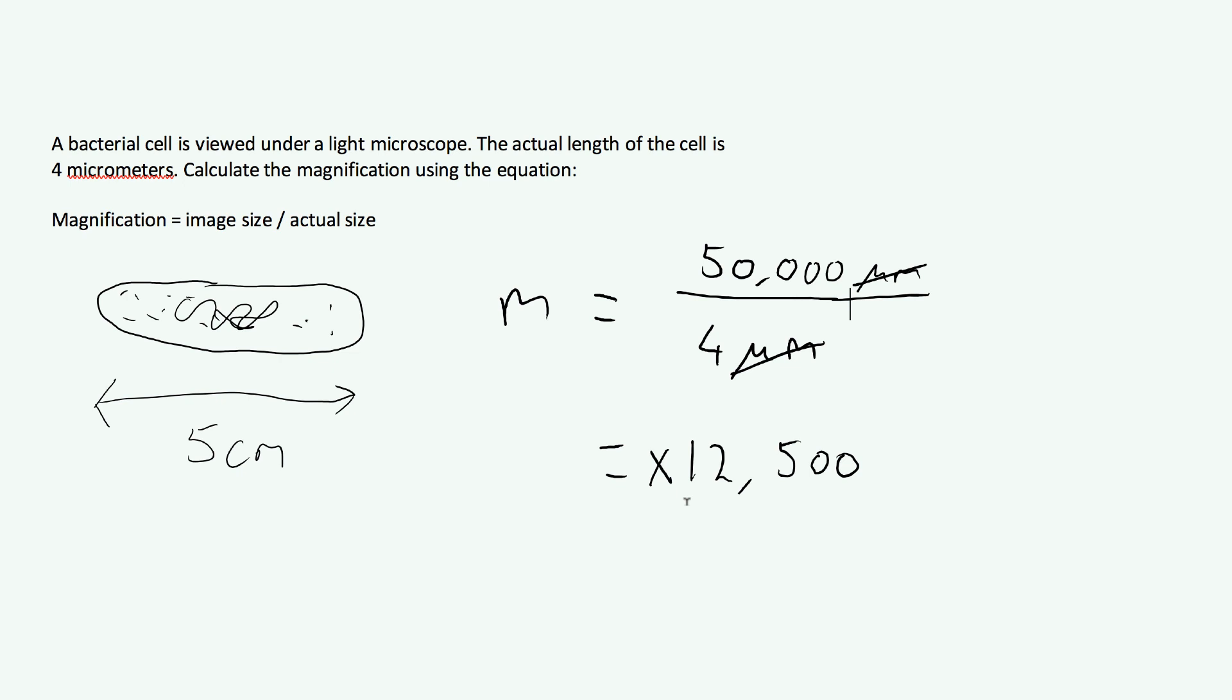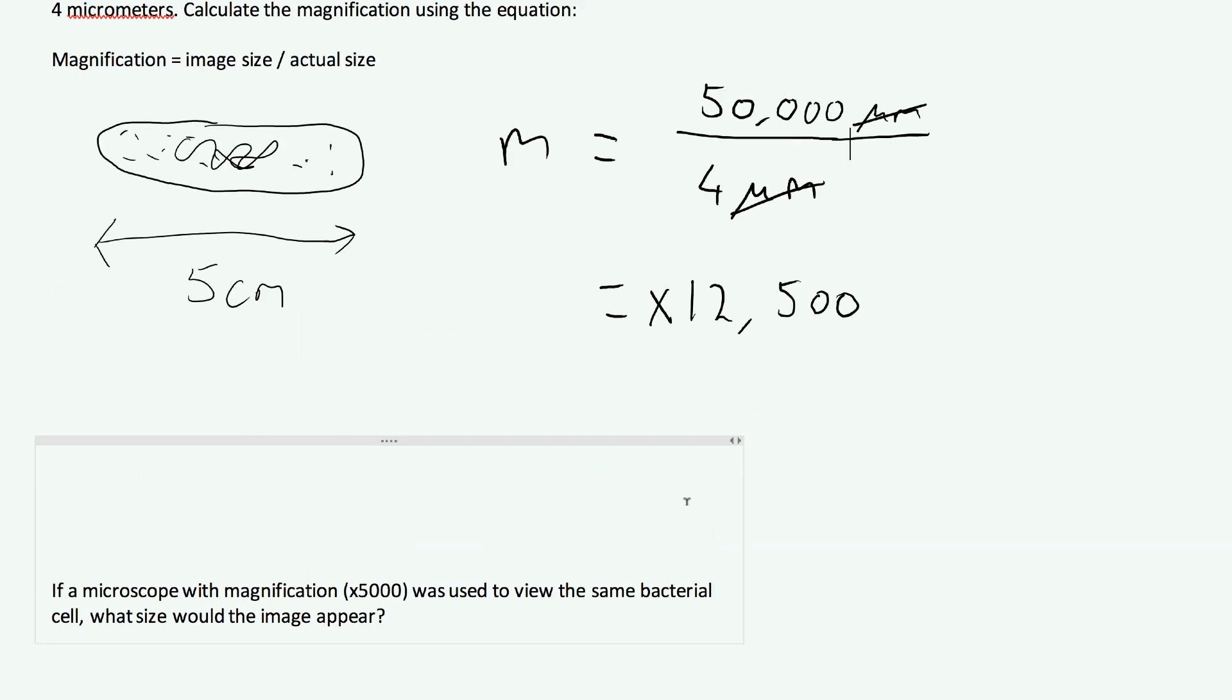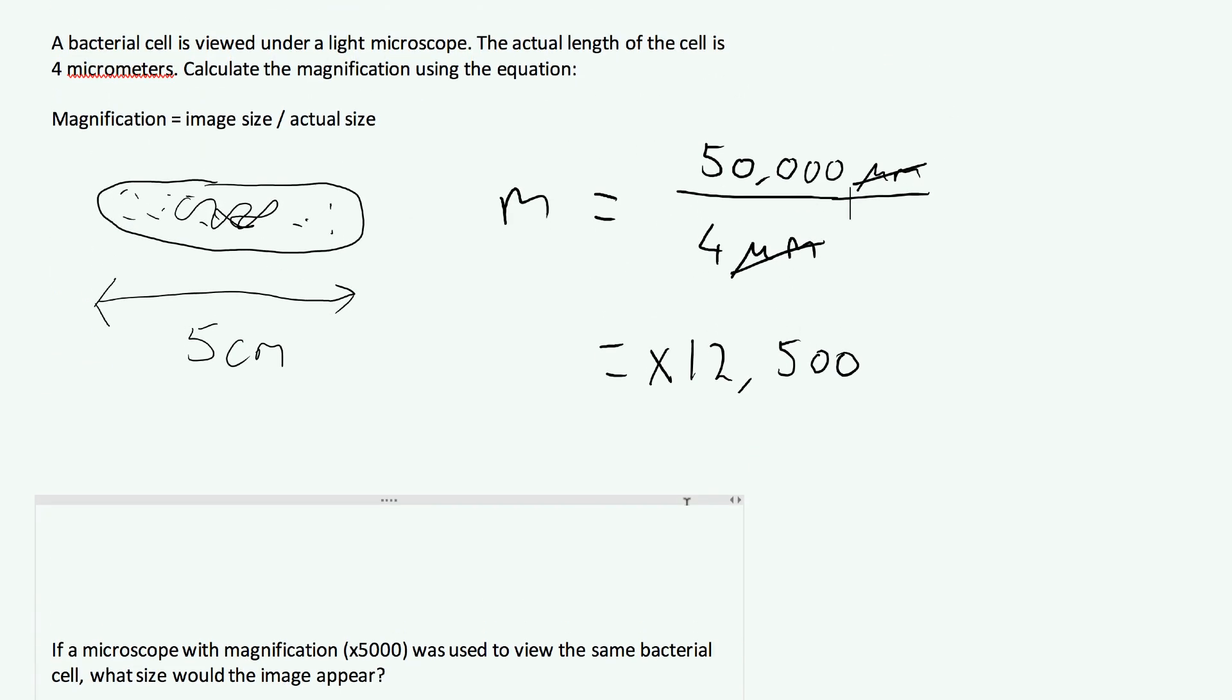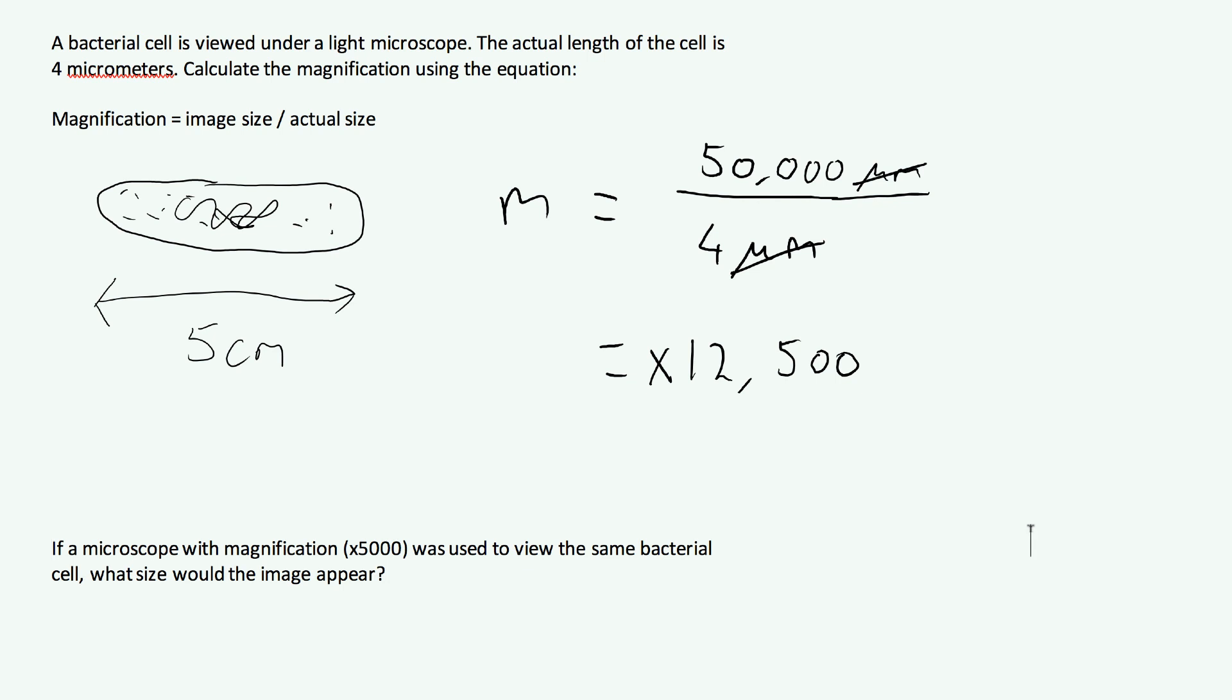It says, if a microscope with a magnification of 5,000 was used to view the same bacterial cell, what size would the image appear? Alright. Now, we're going to be using the same equation, but we want to work out something slightly different. Alright, let's just raise this up so you can see it. What I'm going to say is that this time, m is still equal to, I'm going to say, image size over actual size, because I can't be bothered to write the whole words out.